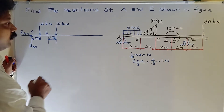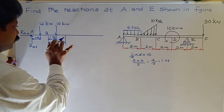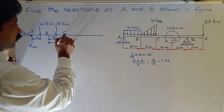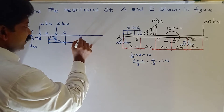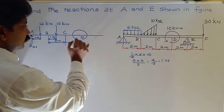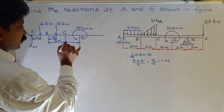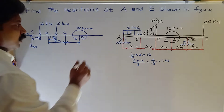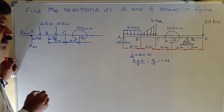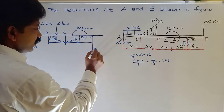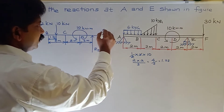Point C is 2 meters from point B. After point C, 2 meters further, one couple is available at point D in the anticlockwise direction. At point E, one reaction RE is available. Two meters after point E, a point load of 30 kN acts downward.